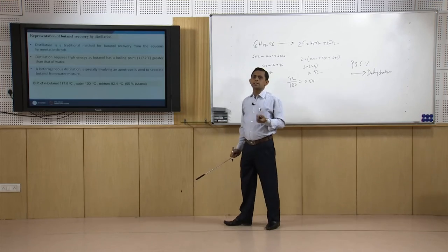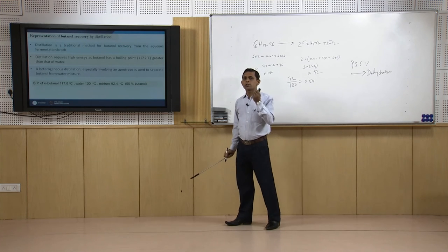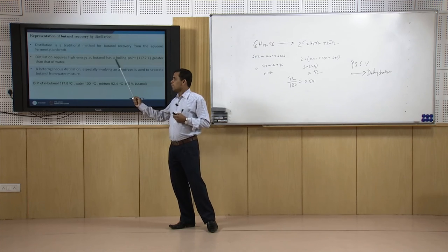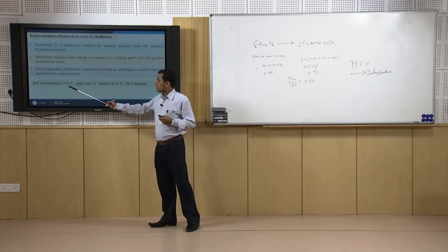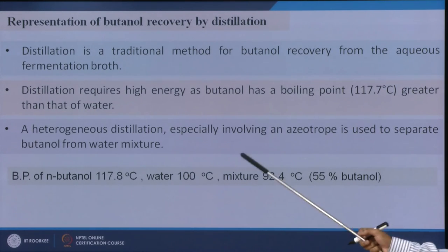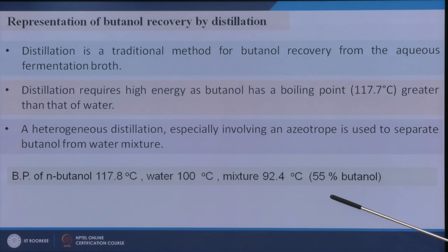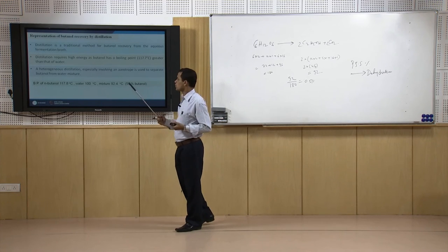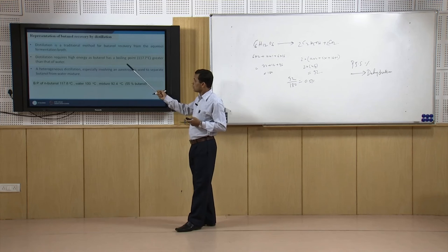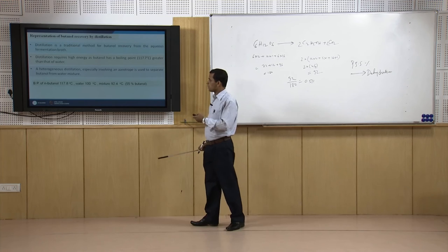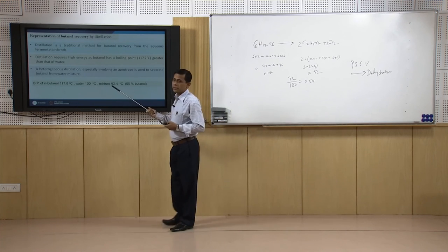Distillation can also be applied for butanol separation. The boiling point of butanol is 117.8°C and water is 100°C; the azeotropic mixture forms at 92.4°C when butanol concentration is 55 percent. So up to 55 percent butanol can be recovered by azeotropic distillation, but for higher concentration, additional molecules must be added and extractive or azeotropic distillation techniques must be followed.